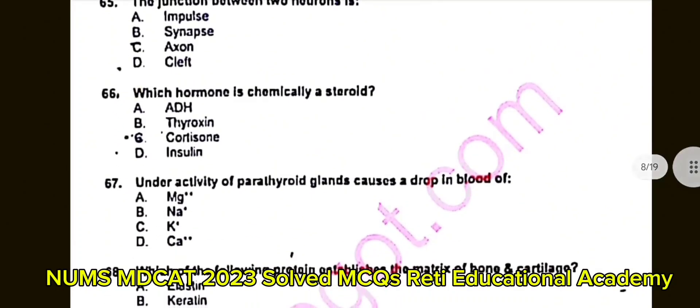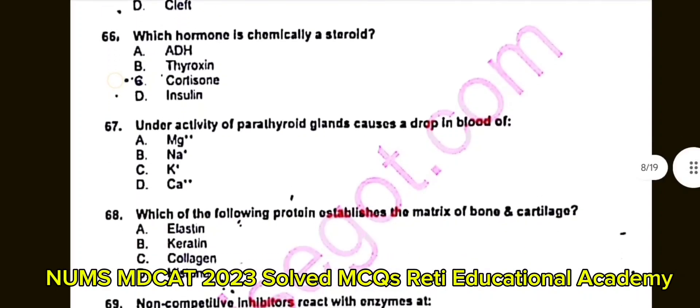Question number 67: Under-activity of parathyroid glands causes a drop in blood levels of? A. Magnesium. B. Na. C. K. D. Ca++. The correct answer is D: Ca++.